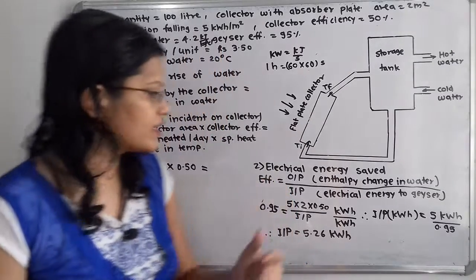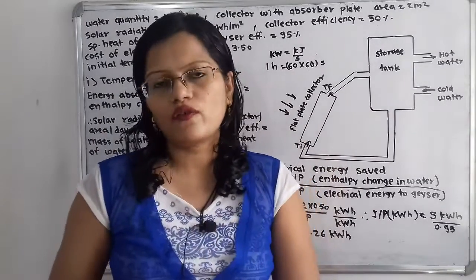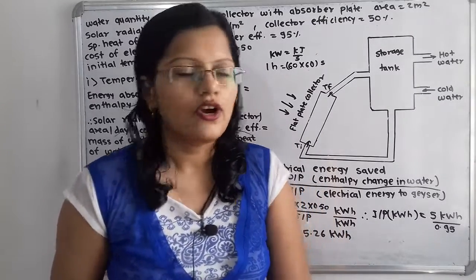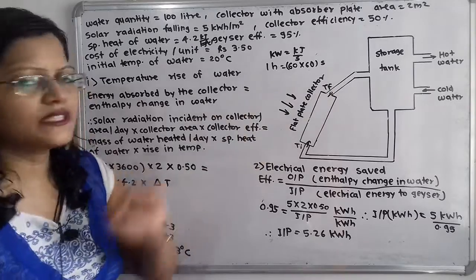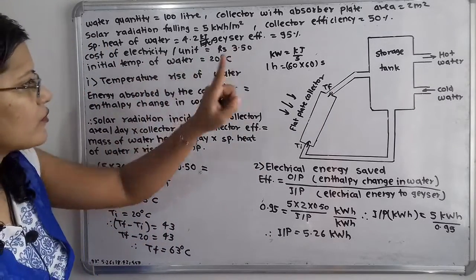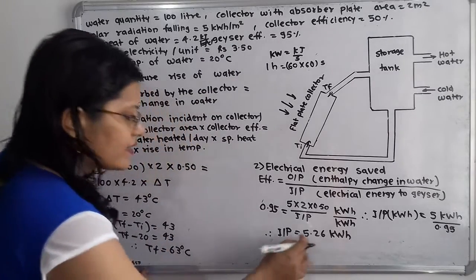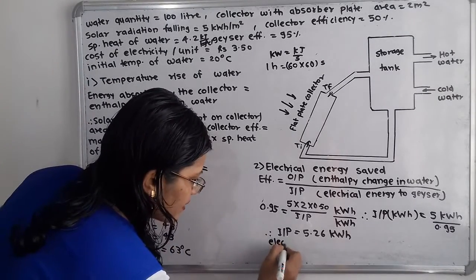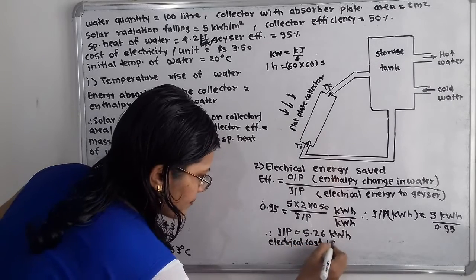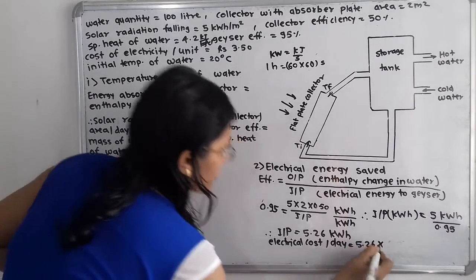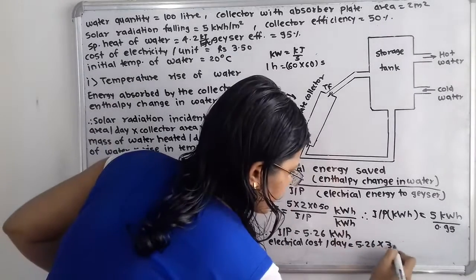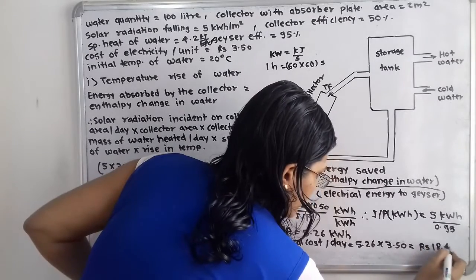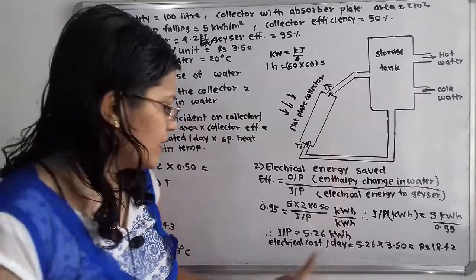Now we have to find out the electrical energy saved in terms of cost. This 5.26 kilowatt hour is the daily electrical energy we have to supply to the geyser to achieve this enthalpy change in water. The cost of electricity for 1 unit is rupees 3.50. So electrical cost per day equals 5.26 multiplied by 3.50, which equals rupees 18.42 per day.